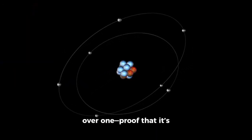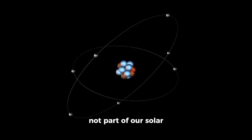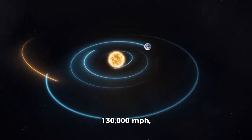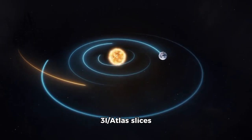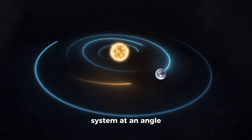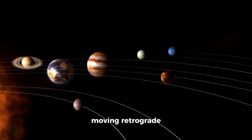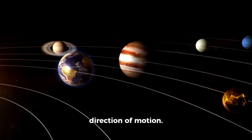Its orbit was hyperbolic, with an eccentricity well over one, proof that it's not part of our solar system and never was. Traveling at over 130,000 miles per hour, 3i Atlas slices through the solar system at an angle of just 5 degrees above the ecliptic plane, moving retrograde against the planet's direction of motion.